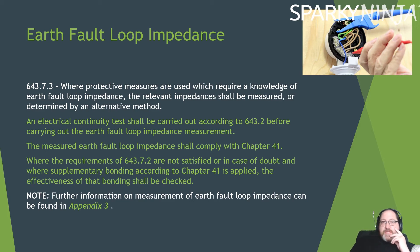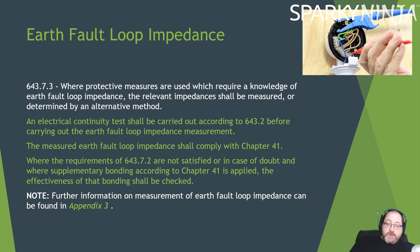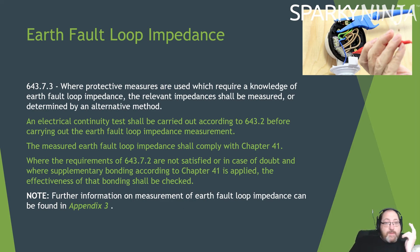An actual continuity test will be carried out according to 6432 before carrying out an earth fault loop impedance measurement. The measured earth fault loop impedance will comply with Chapter 41, and if it is not satisfied — in case of doubt where supplementary bonding according to Chapter 41 is applied — the effectiveness of the bonding shall be checked. So you measure continuity before your earth fault loop. Also note: further information on the measurement of earth fault loop impedance is found in Appendix 3 — it used to be in Appendix 14, it's now in Appendix 3, so that's moved.